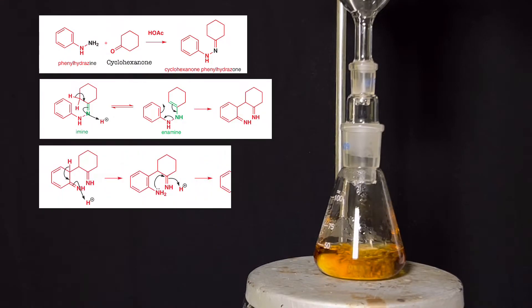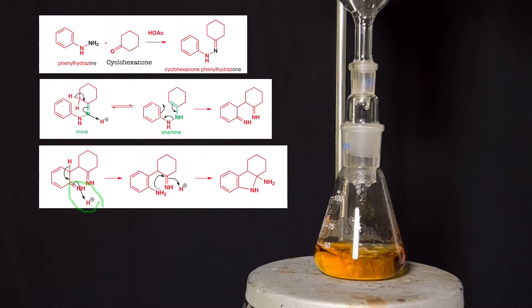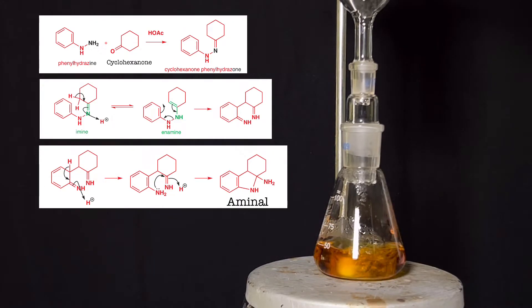Next, re-aromatization of the benzene ring occurs by transfer of a proton from the carbon to the nitrogen, creating an aromatic amine that immediately attacks the other amine and this gives rise to a form of amin-al which is a nitrogen equivalent of an acetal.